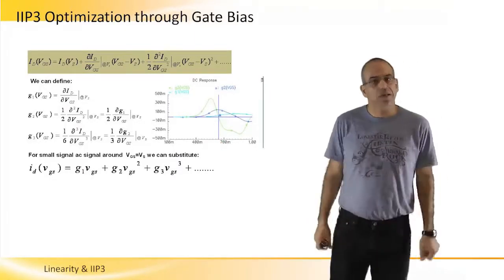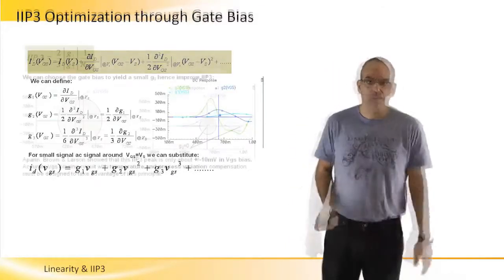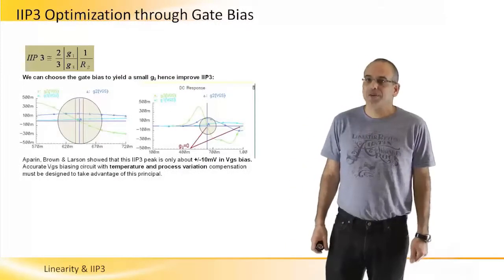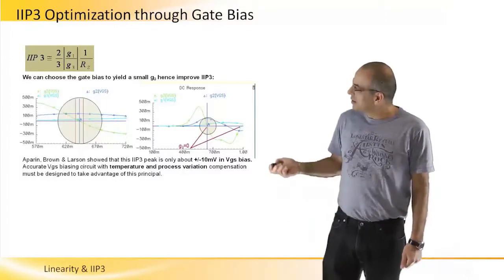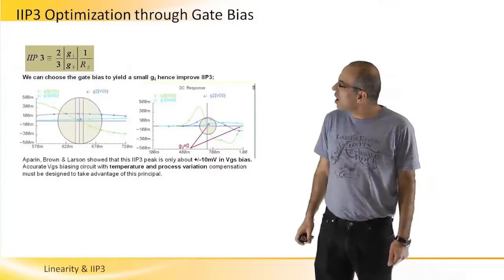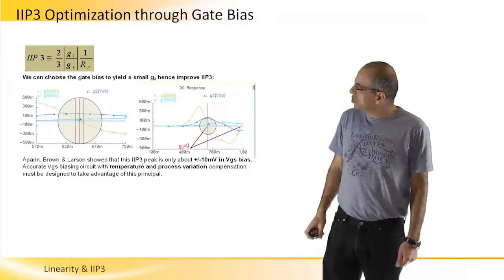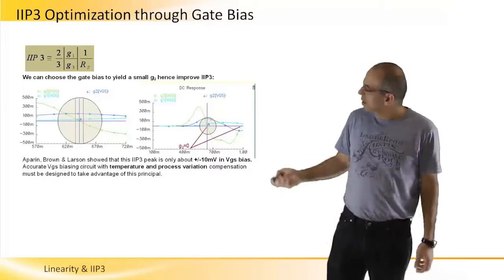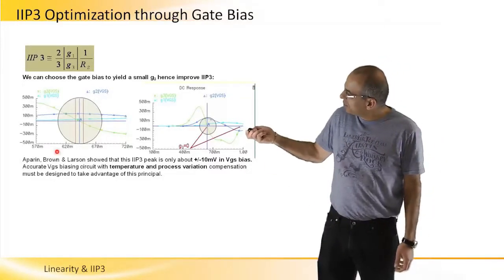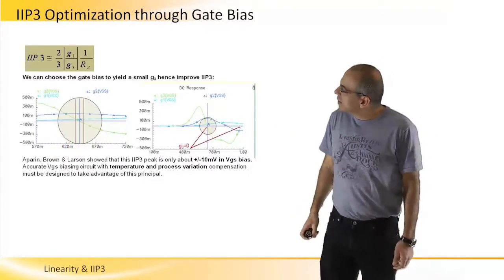So going back to the equation that Professor Li has derived for IIP3, we can see that if we find this G3 or very low G3 that is described here around this zero crossing of the VGS line, we can really maximize IIP3.